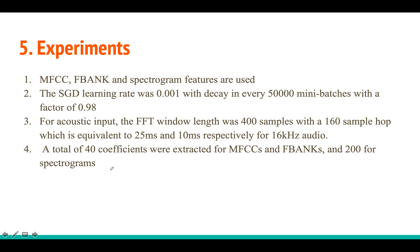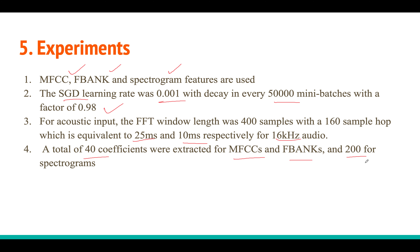For experiments, MFCC, FBank, and spectrogram features are fed to the end-to-end dialect identification model. They use stochastic gradient descent with a learning rate of 0.01, decaying by a factor of 0.98 after every 50,000 mini-batches. Acoustic features use a 25ms window with 10ms shift at 16kHz. 40 coefficients are extracted for MFCC and FBank, and 200-dimensional features are extracted for spectrograms.